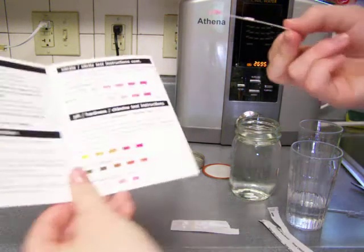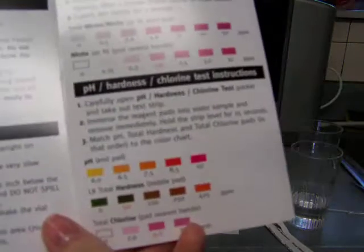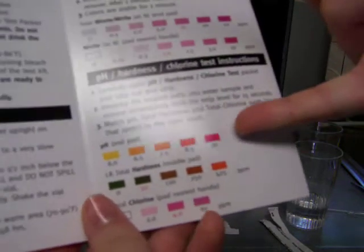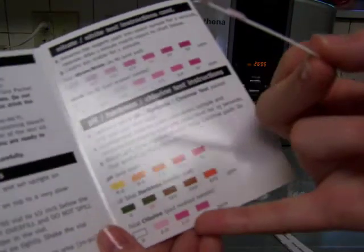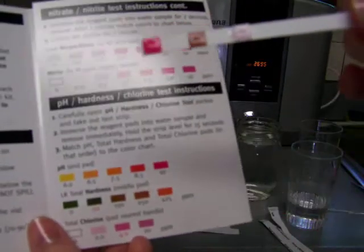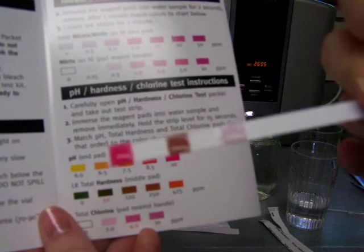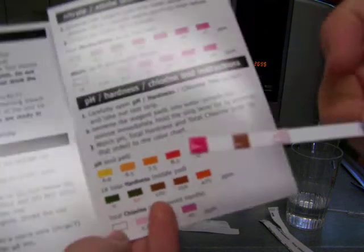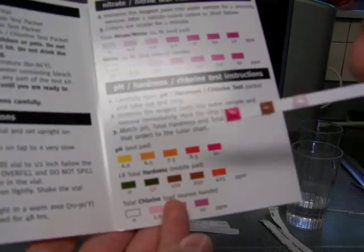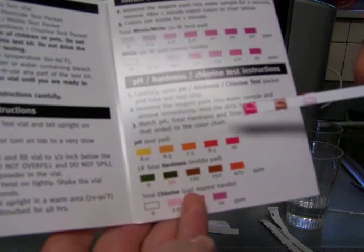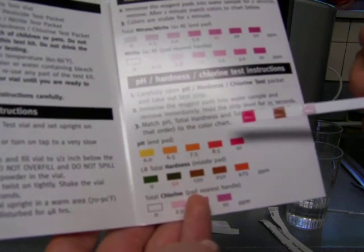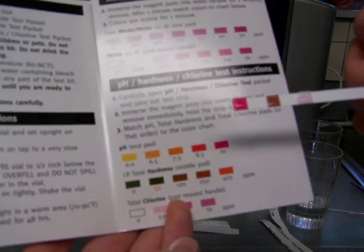Wow, this is like intense. So this is the pH hardness chlorine test instructions. Here's the pH color chart. This is the hardness color chart. And this is the chlorine color chart. Now if we look at this, this very left one is the pH. And it looks like it's a 10, or possibly between an 8.5 and a 10, which is pretty alkaline. This is like city tap water.